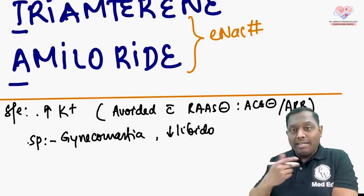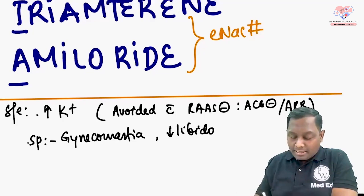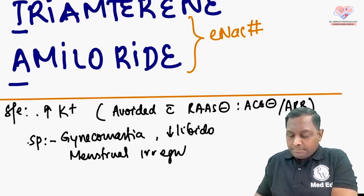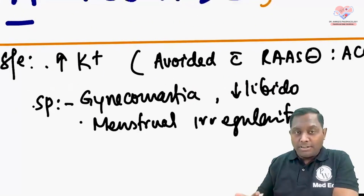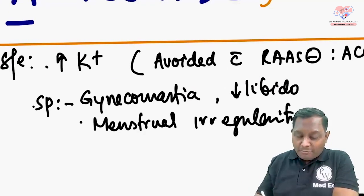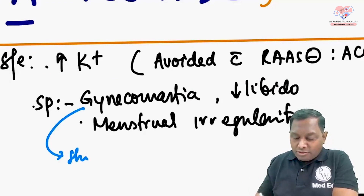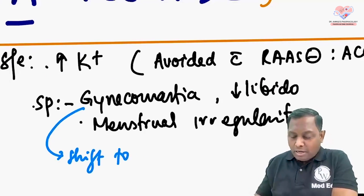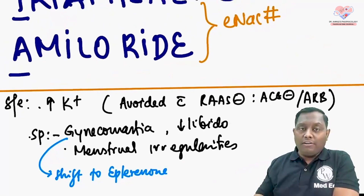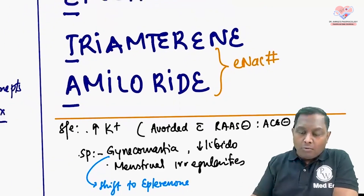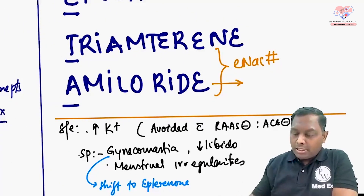Spironolactone can also cause menstrual irregularities. If a patient develops these anti-androgenic side effects (the 'gift' of spironolactone), you should shift the patient to eplerenone, which does not have anti-androgenic properties.